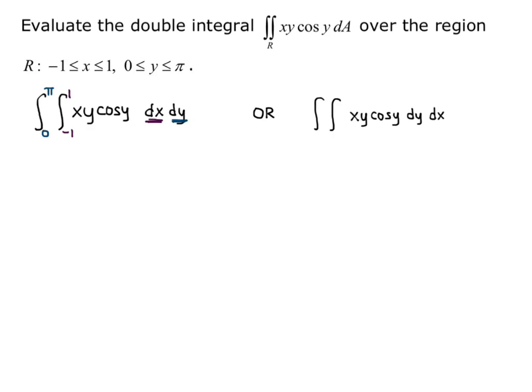Or my second choice is doing a dy dx where I would integrate with respect to y first. Bounds for y on the inner integral would be 0 to pi and bounds for x on the outer integral would be negative 1 to 1. So I would get the integral from negative 1 to 1, integral from 0 to pi of xy cosine y dy dx.